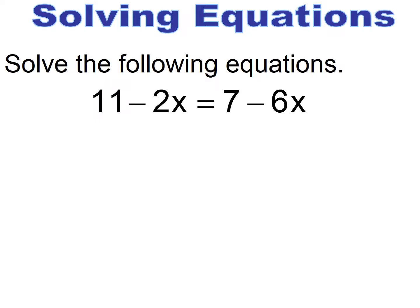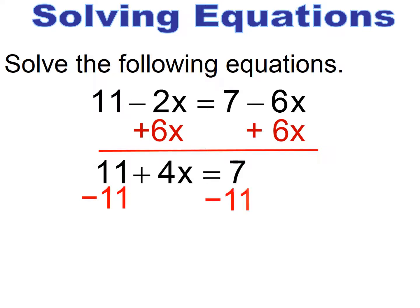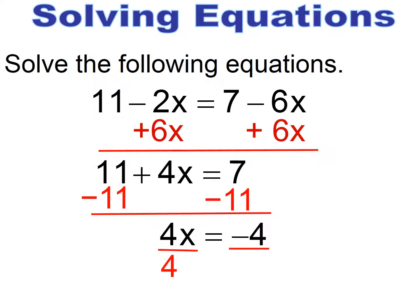Pause and try. It doesn't matter which side you choose to move to. I chose to move to the left and added 6x to both sides, leaving me with 11 plus 4x equals 7. I subtract 11 from both sides and I'm left with 4x equals negative 4. I divide through by 4 and x equals negative 1.